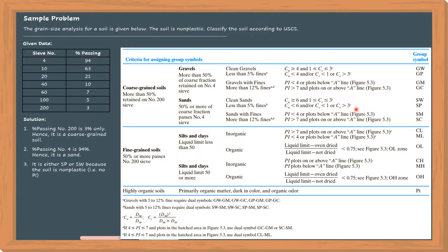For it to be classified as SW, C sub U must be greater than or equal to 6, and the value of C sub C must be within 1 and 3. For it to be considered as SP, the percent of fines must be less than 5%, and C sub U must be less than 6, and/or - meaning either both criteria or just one.